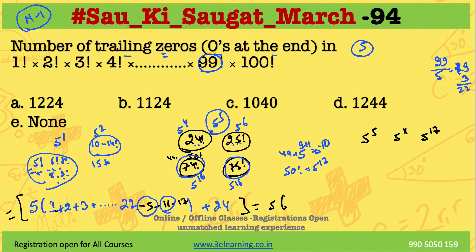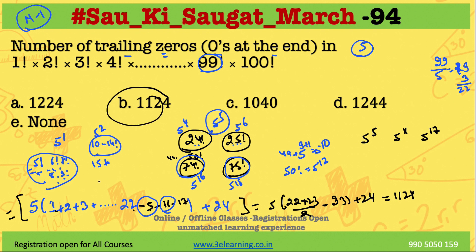From 1 to 22, we have the sum 22 × 23 / 2, minus 16 and 33, plus 24. When we solve this value, we get 1124. So the answer to this question is 1124. This is the hardcore and crude concept method.